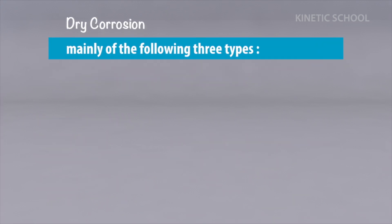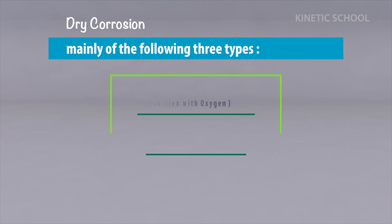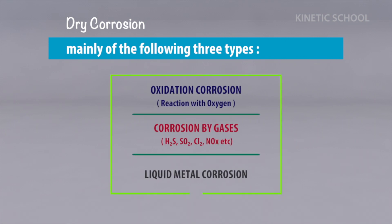Dry corrosion is mainly of the following three types: oxidation corrosion, corrosion by gases, and liquid metal corrosion.